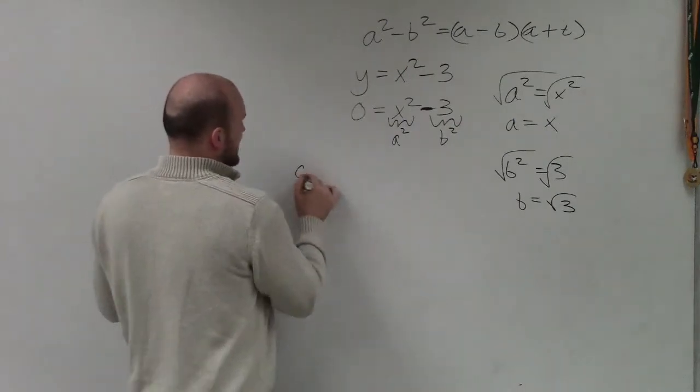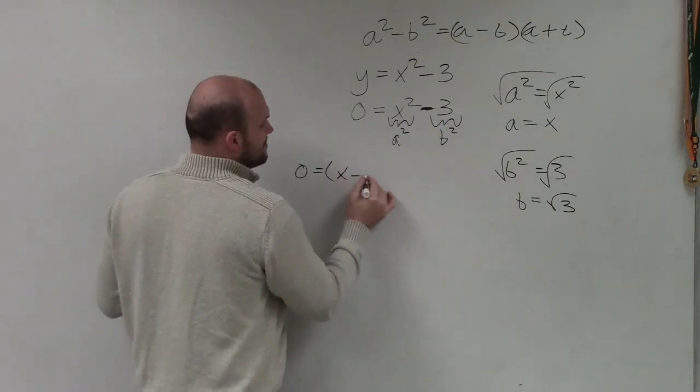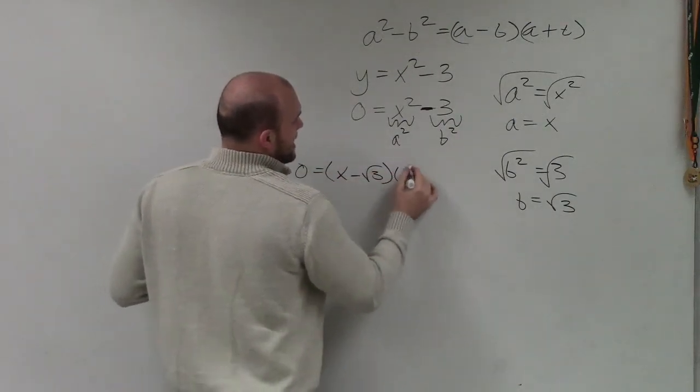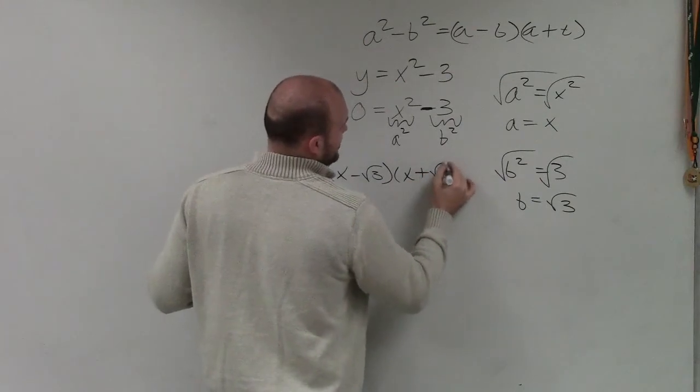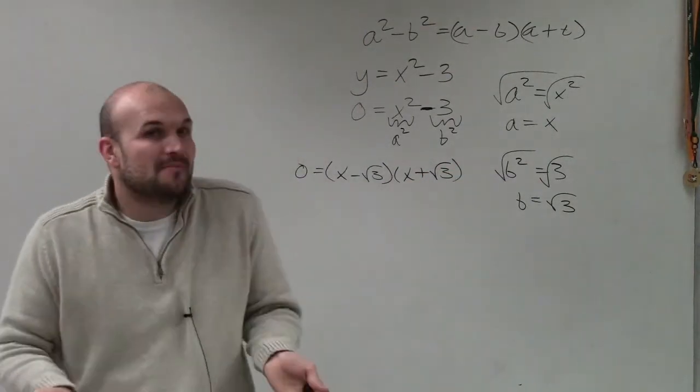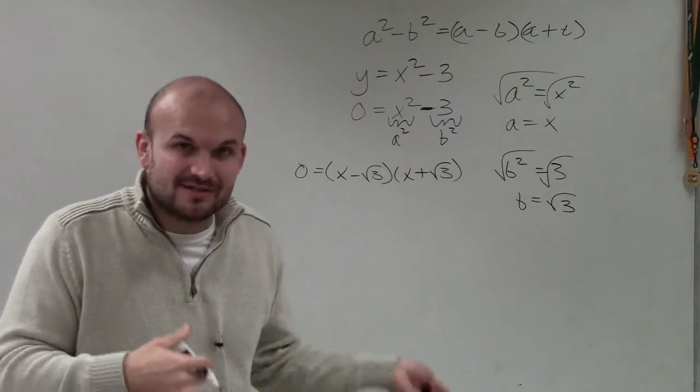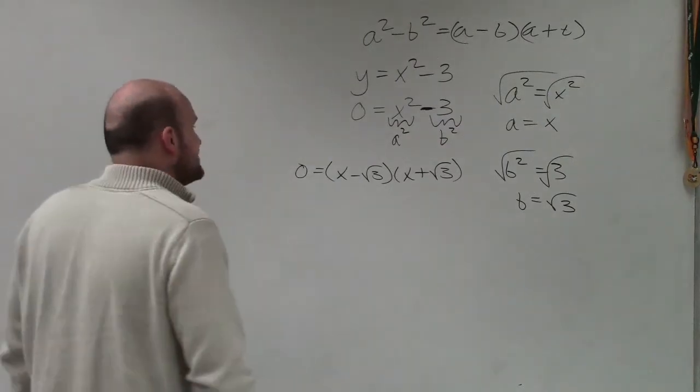So therefore, by factoring this, I can write 0 equals x minus the square root of 3 times x plus the square root of 3. And yes, those are irrational numbers, but I can solve that by factoring, by applying the difference of two squares.